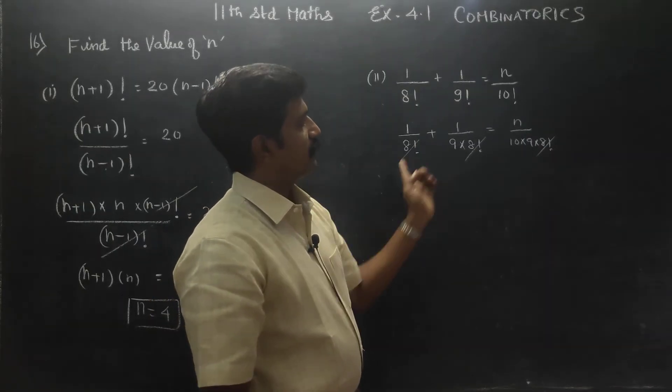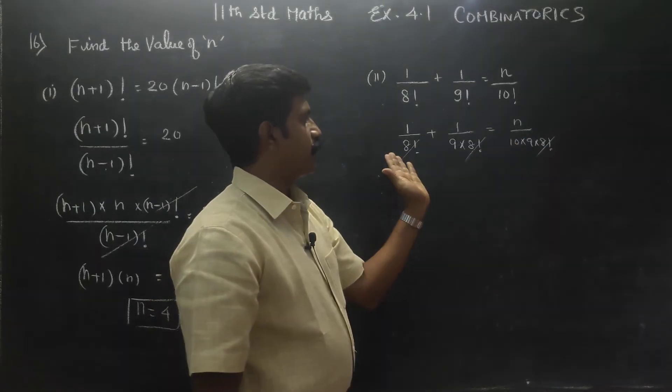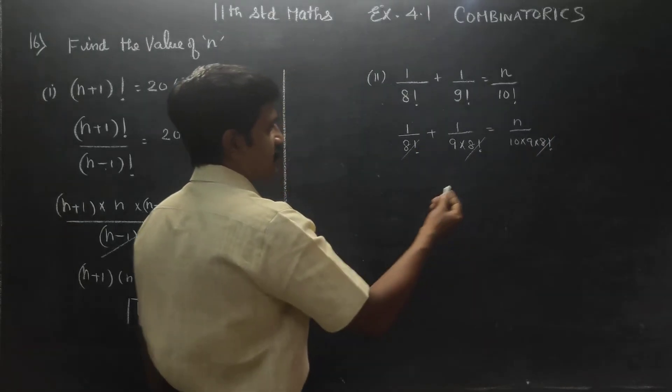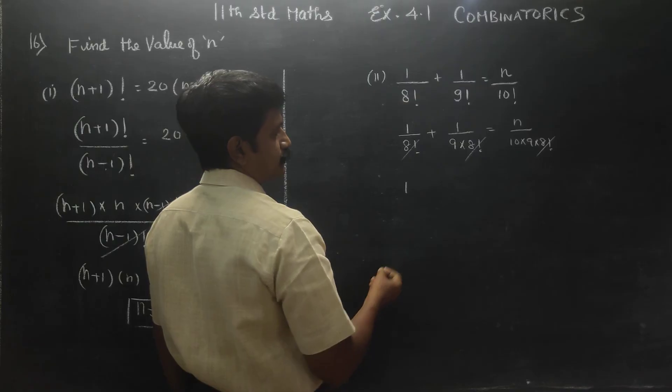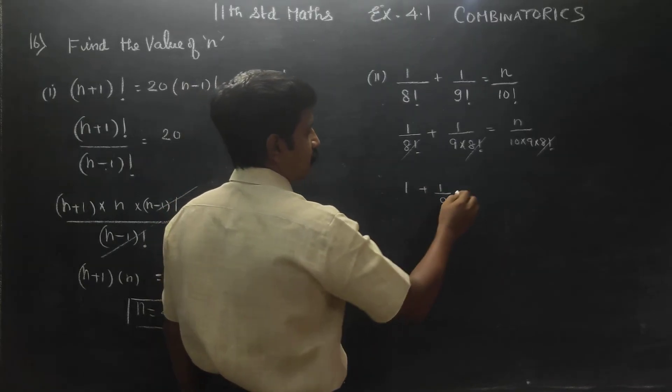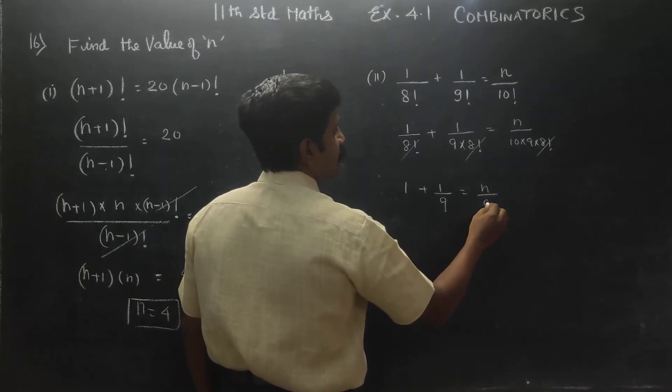If you do it, you will be able to cancel. Denominator will be the number of fractions. Now the sum will be very simple. 1 plus 1 by 9, 1 by 9 is equal to n by 10 into 9, 90.